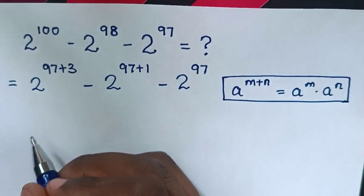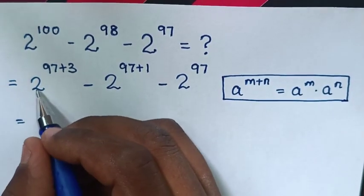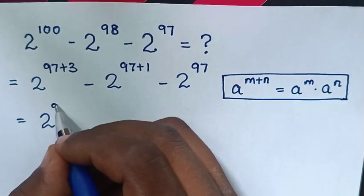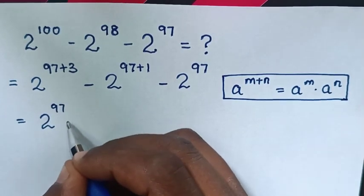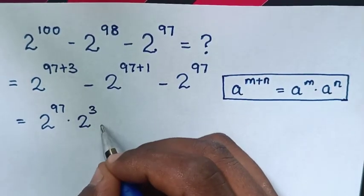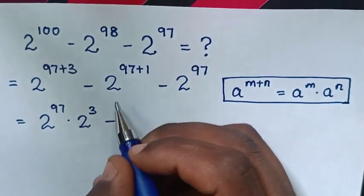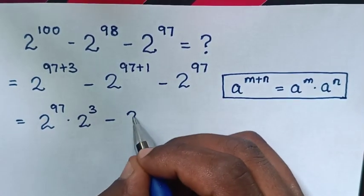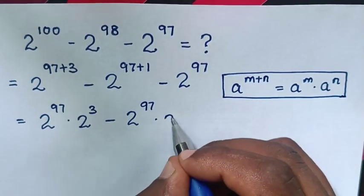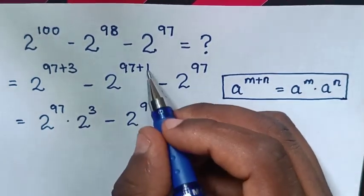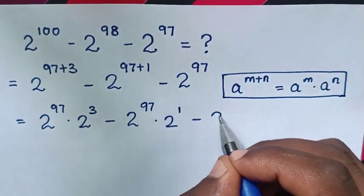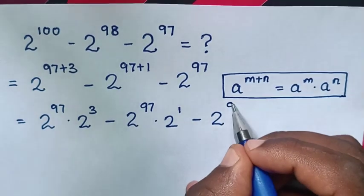Then it will be equal to 2 power of 97 times 2 power of 3, then minus 2 power of 97 times 2 power of 1, then minus 2 power of 97.